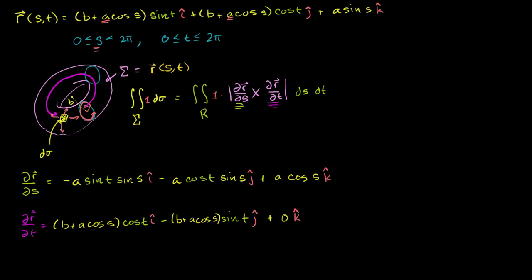Where we left off in the last video, we were finding the surface area of a torus or a donut shape. We were doing it by taking a surface integral. In order to take a surface integral, we had to find the partial of our parameterization with respect to s and the partial with respect to t. Now we're ready to take the cross product, then we can take the magnitude of the cross product, and then we can actually take this double integral and figure out the surface area.